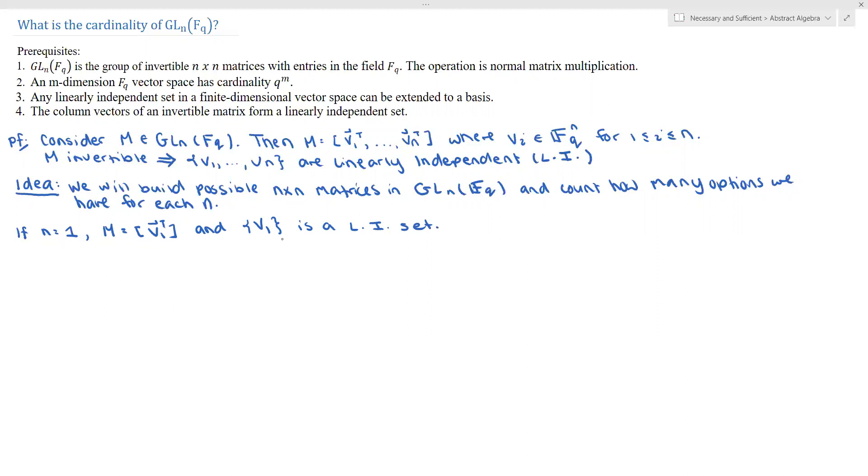The only thing this cannot be is the zero vector. If it were the zero vector, that would not be linearly independent. So this is where we're going to use prerequisite number 2. There are Q to the n minus 1 choices for V1. So again, this just comes from the fact that V1 is an element of FQ to the n. So there are Q to the n elements and the only one we cannot have is the zero vector. So we just pluck it out of the set of choices we have. So this is if n is equal to 1.